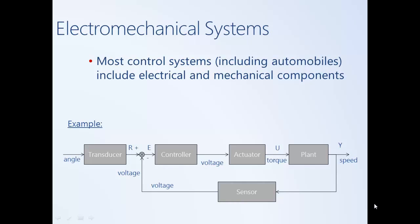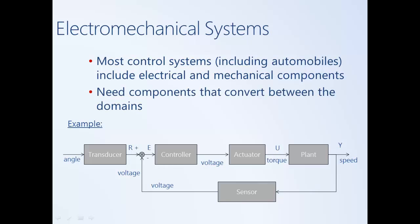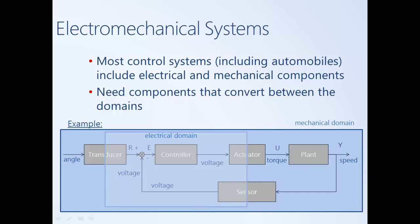Most control systems, including automotive control systems, include electrical and mechanical components. In the figure shown, we have an example feedback system with the typical elements of a control system. There are components that are in the electrical domain and components that are in the mechanical domain. We need components that are able to convert between these two domains. The controller itself is usually implemented in the electrical domain, either as a circuit or in software, while the system being controlled may be mechanical.